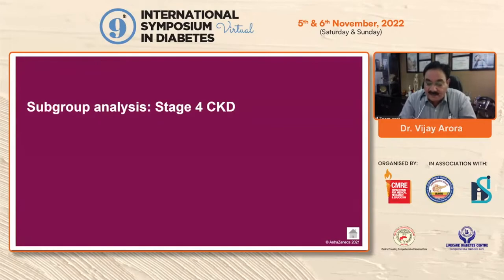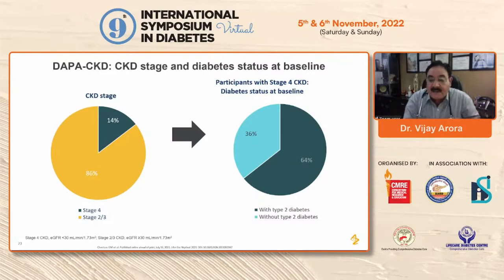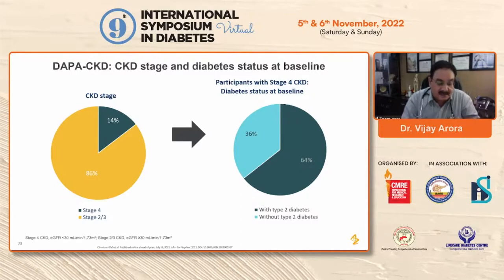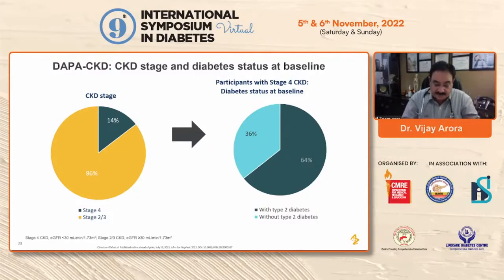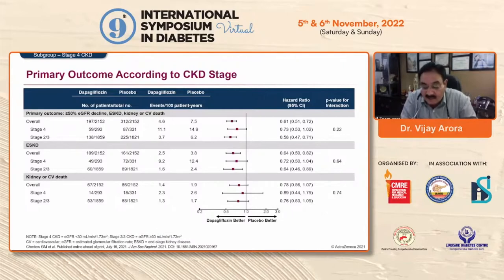Dapagliflozin by CKD stage and diabetes status at baseline: stage 4 comprises around 14% and stage 2-3 comprises 86% of patients. By diabetes status, 64% have type 2 diabetes and 36% do not. Outcomes by CKD stage differ between stage 2-3 and stage 4, but all favor dapagliflozin. Regarding eGFR decline over the study: in the acute phase (first 2 weeks), there is an initial eGFR decline, but in the chronic phase there is no further decline. The total eGFR reduction is 1.23 vs. 0.89 in stages 3 and 4, and rates of 1.82 in stage 4 and 1.94 in stages 2-3.